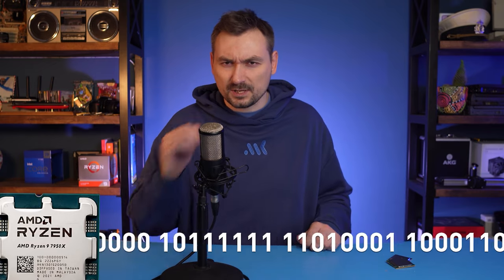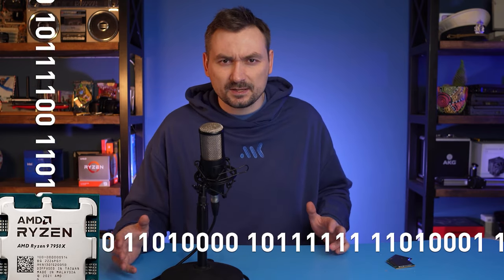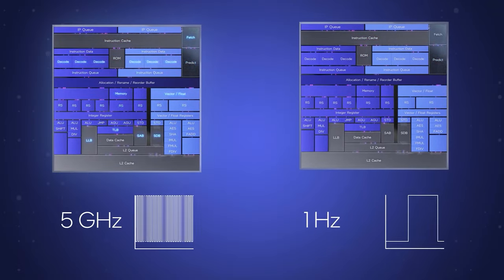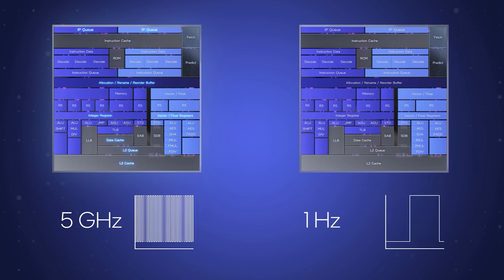Then the question arises: since we can see hundreds of processes and thousands of threads in the task manager, how does the processor cope with all of them at the same time? The short answer is, it doesn't. Just like 70 years ago, we still run only one thread at a time on one logical core. All these thousands of threads do not run simultaneously, but since their execution takes minuscule fractions of a millisecond, it tricks us into thinking that it does.